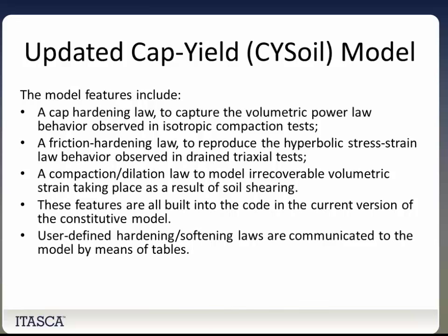The first model is the updated CY soil model. Its features include a cap hardening law to capture volumetric power law behavior observed in isotropic compaction tests, a friction hardening law to reproduce hyperbolic stress-strain behavior observed in strained triaxial tests, and a compaction dilation law to model irrecoverable volumetric strain from soil shearing. These features are built into the code, and user-defined hardening softening laws are communicated to the model by means of a table.